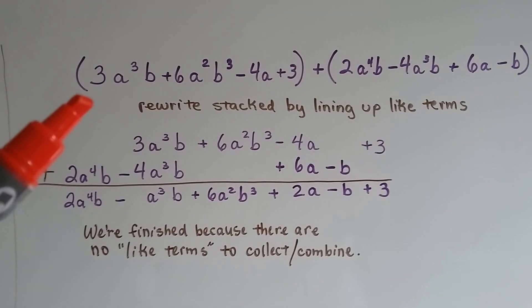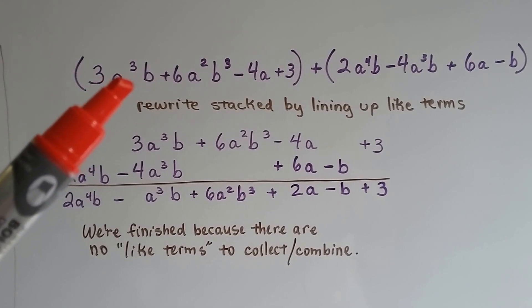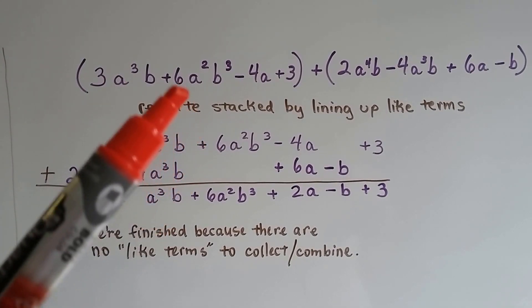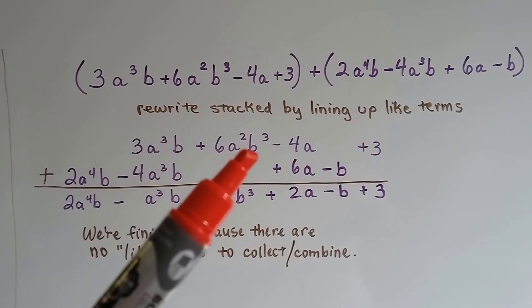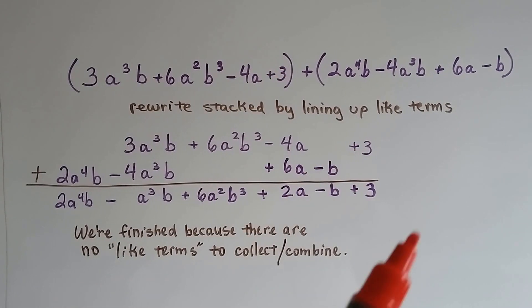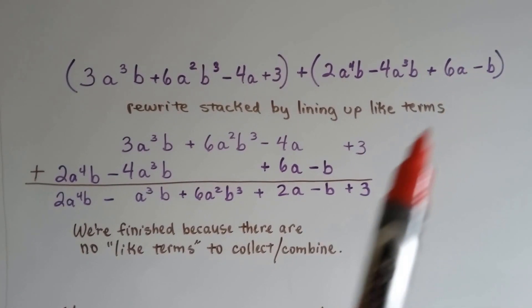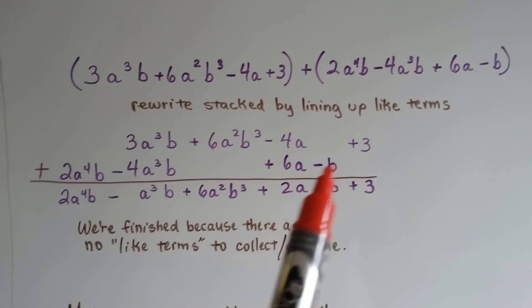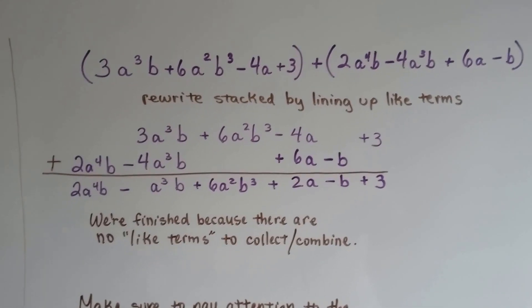So we write this one, 3a to the third power b. And 6a to the second power b to the third power minus 4a. And then we leave a space to add the plus 3 because this one's got a minus b. And that's going to go right together like that. So they're all spread out.